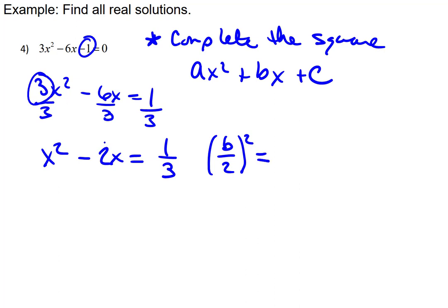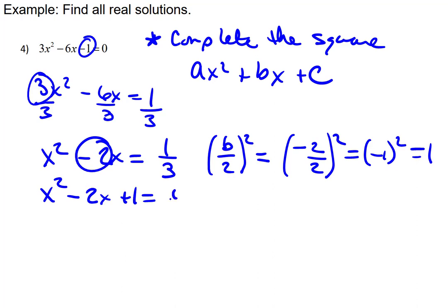We'll then add our special (b/2)² to both sides. Now, in this case, b is this middle coefficient of -2. So, that's really (-2/2)², which is really (-1)², which is 1. So, I just want to add 1 to both sides. That'll give me x² - 2x + 1 = 1/3 + 1.